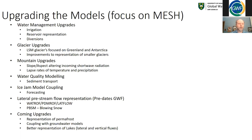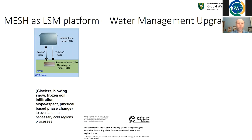Matt McDonald implemented the prairie blowing snow model in MESH, which is now being used in mountainous environments as well, giving us a way of representing lateral cold regions processes not typical of land surface schemes. There are also coming upgrades: Mohammed Al-Shami has been doing work on how permafrost is represented in the MESH model, and Chang Huang is working with David Rudolph on coupling land surface schemes with groundwater models. We're also looking at improving the representation of lakes in terms of lateral and vertical fluxes.